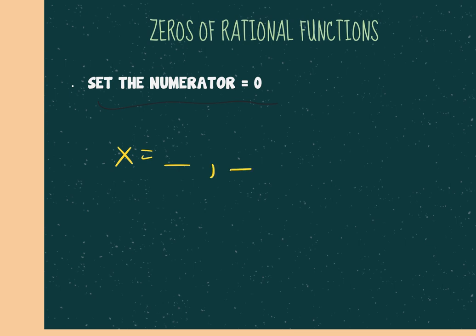A number can occur more than once, and just like before, if the multiplicity was 2, it will impact your graph the same way. So if I get a 2 that occurs twice, my graph is actually going to bounce off that — and that's what creates those parabola shapes.